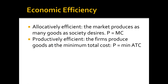Perfect competition achieves economic efficiency by being allocatively and productively efficient. Allocatively efficient means that perfect competition produces as many goods as society desires — at the point where price equals marginal cost. At this point, the value of the good equals the cost of producing one additional unit. If marginal cost is less than price, the good is being underproduced because the value society places on it is higher than the additional cost of producing it. If marginal cost is greater than price, it's being overproduced. Productively efficient means that perfect competition produces goods at the lowest price possible — at the minimum average total cost.